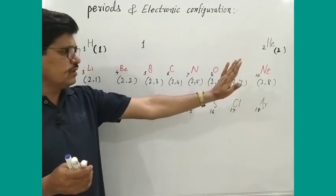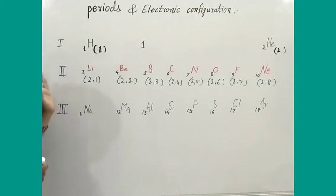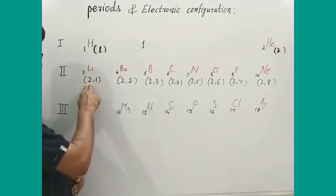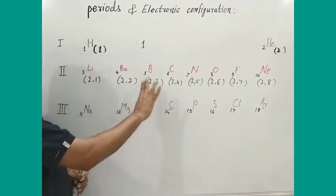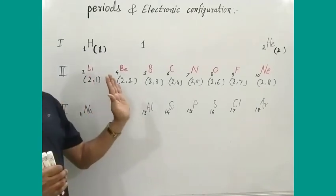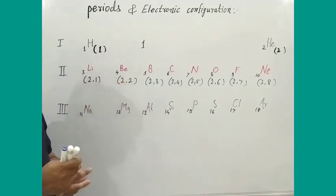What is the similarity between the second period elements? The second period elements all have two shells. That is the similarity between them. The number of shells is the same, but the number of valence electrons is different.